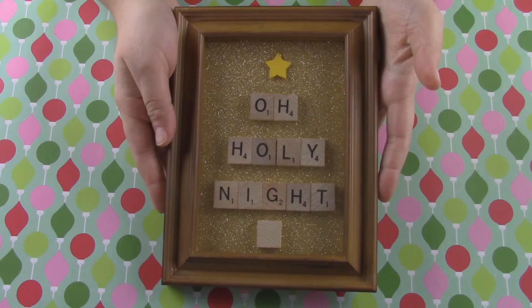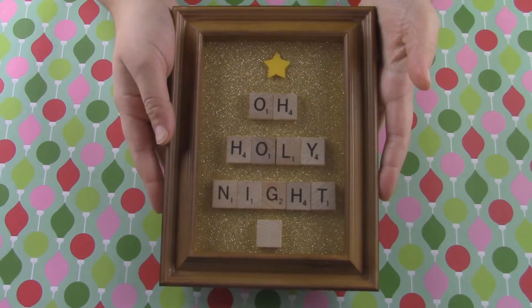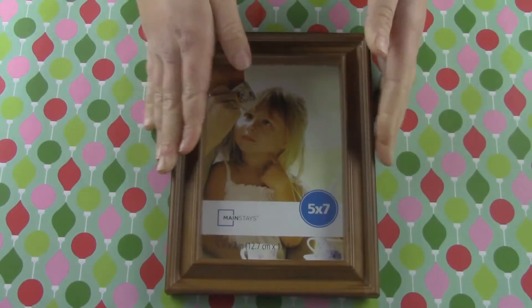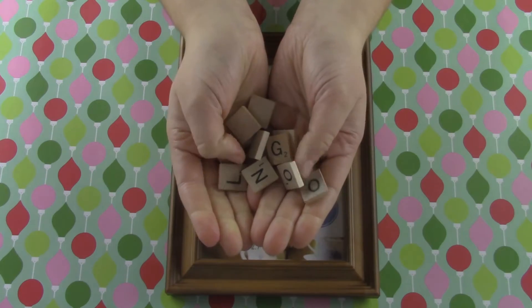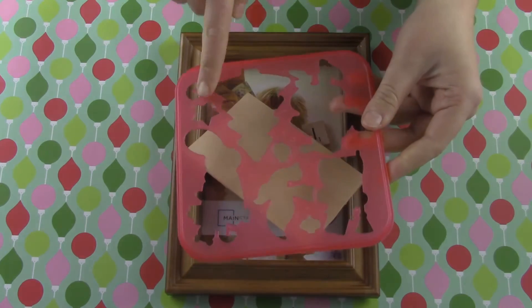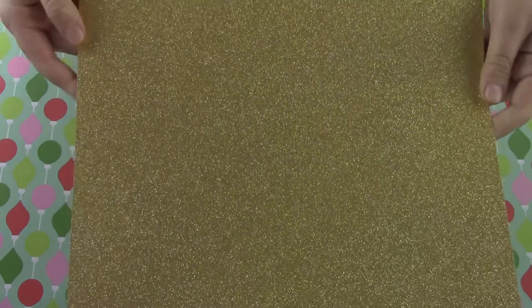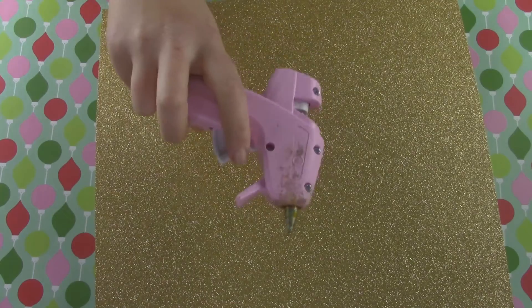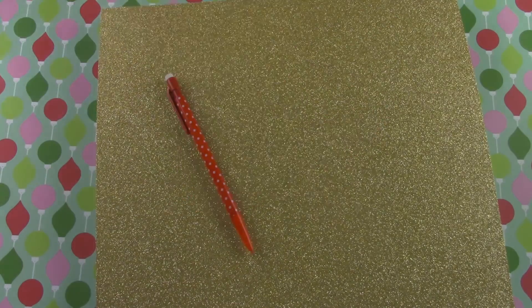The first of our Christmas DIYs is this Scrabble letter picture frame. The materials you'll need for this are a picture frame, some Scrabble letters, a piece of balsa wood or cardboard, a star stencil, a piece of cardstock, glue gun and glue stick, a pencil, and a pair of scissors.